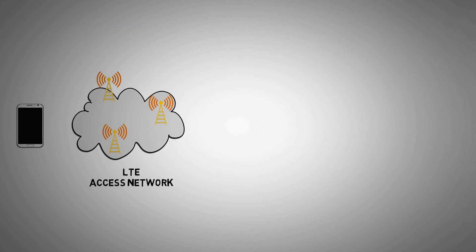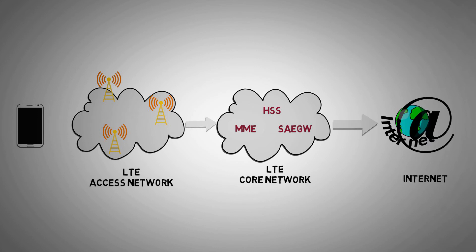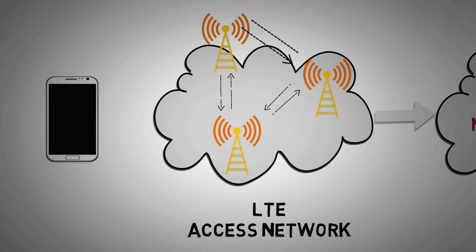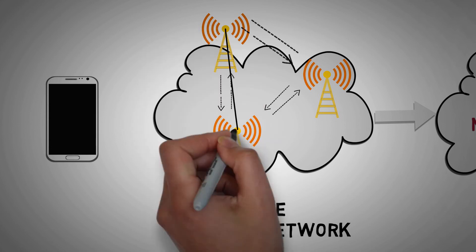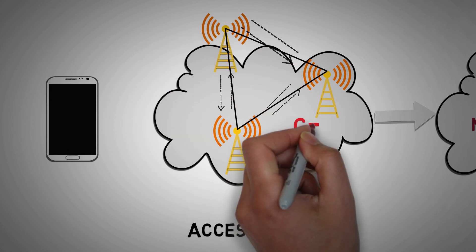One of the key requirements for LTE is that it should be able to provide a very low level of latency. The additional processing required for multiple site reception and transmission could add significantly to any delays, resulting from the need for additional processing as well as communication between the different sites. To overcome this, it is anticipated that the different sites may be connected together in a form of centralized RAN, or C-RAN.